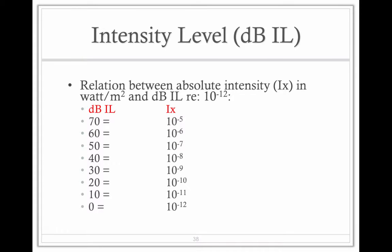Let's do the one below it. Use the absolute value 10 to the negative 6 over the reference 10 to the negative 12. Negative 6 minus negative 12 is positive 6. Make it deci, times it by 10, 60 decibels IL, intensity level. We're talking intensity level because our reference is 10 to the negative 12.